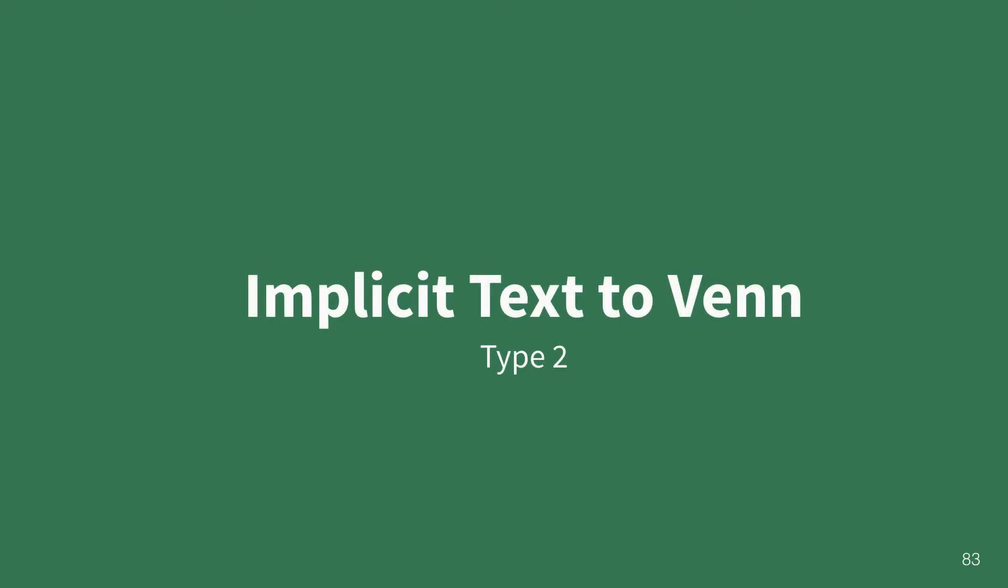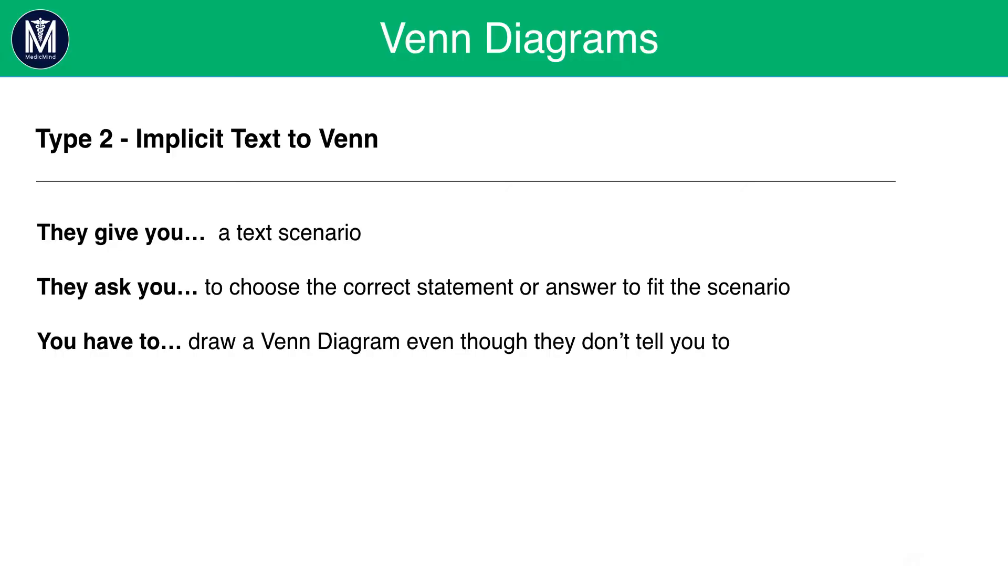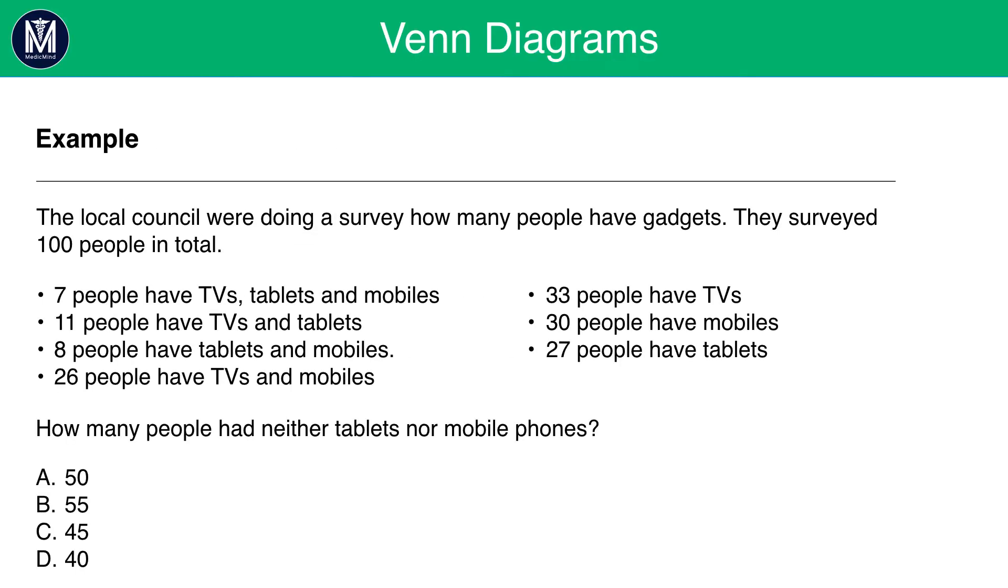Now, it's time to look at type 2, implicit text to Venn. Here, they will give you a text scenario. They will ask you to choose the correct statement or answer to fit the scenario. You will have to draw a Venn diagram, even though they don't tell you to. If you try and answer these questions without drawing a Venn diagram, it will take you forever. And it will be inefficient and will cost you a lot of valuable time.